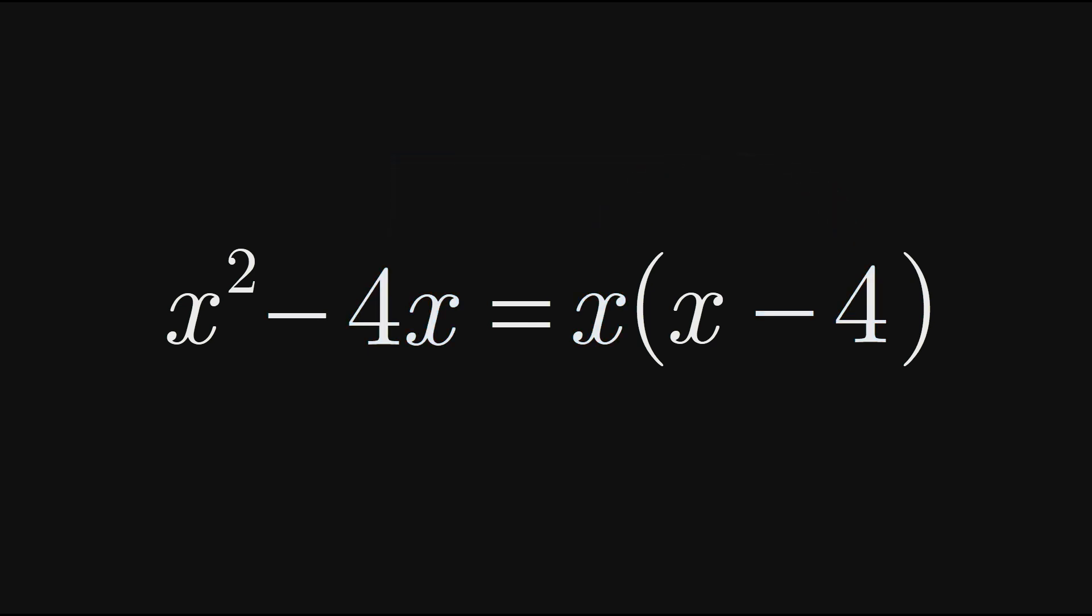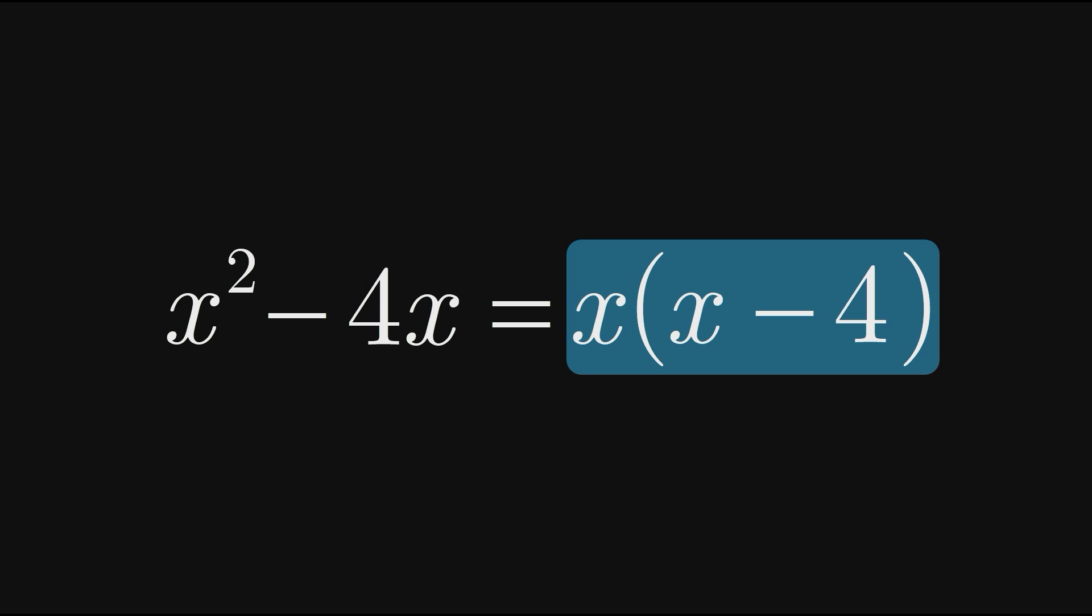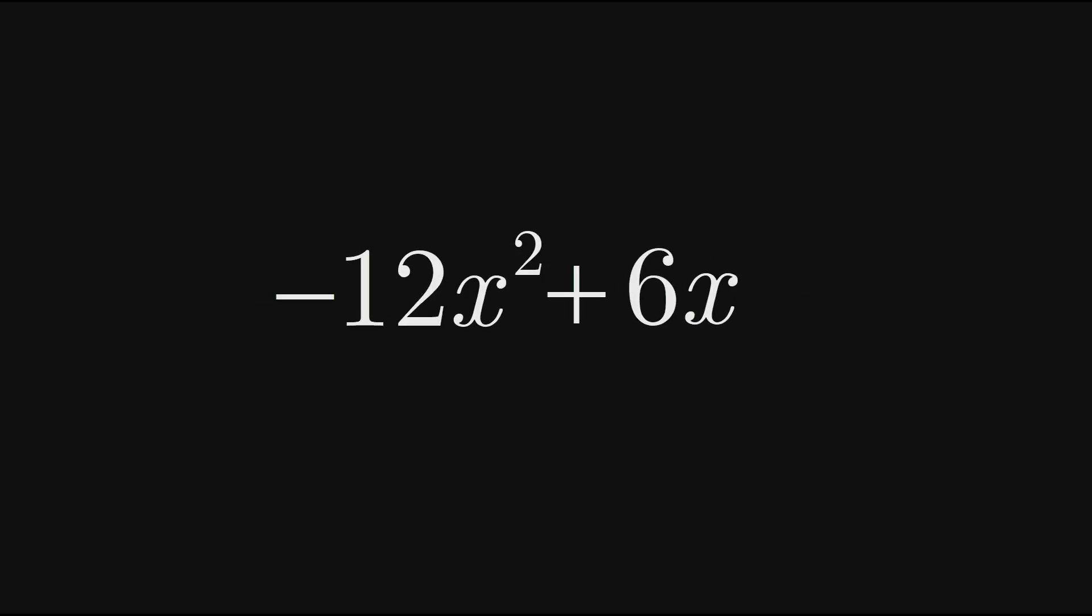Therefore, x squared minus 4x in factored form is x times x minus 4. Let's finish with one more quick example. Let's factor negative 12x squared plus 6x.